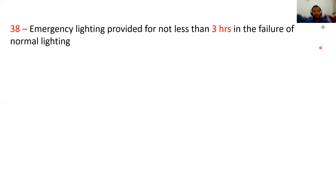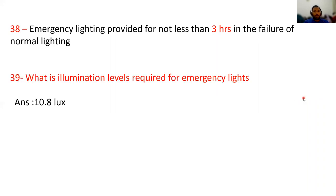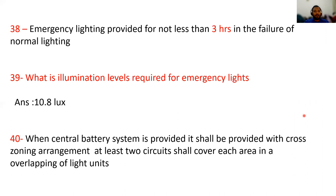Emergency lighting shall be provided for not less than 3 hours upon failure of normal lighting. What illumination level is required for emergency lights? A minimum of 10.8 lux is required. When a central battery system is provided, it shall have a cross-zoning arrangement, and at least two circuits shall cover each area with an overlapping of light circuits.